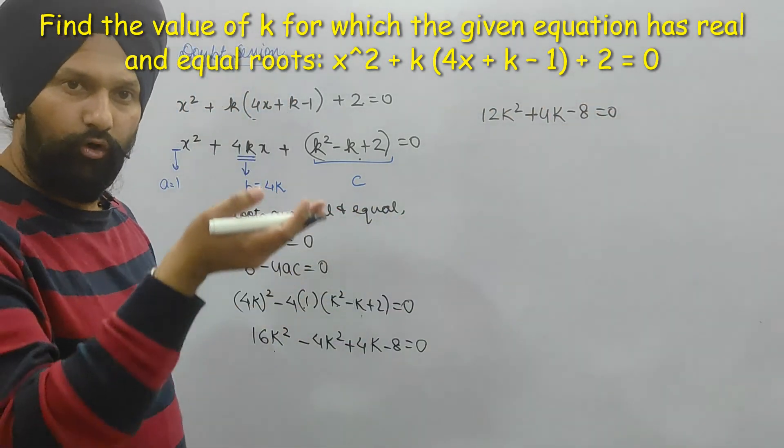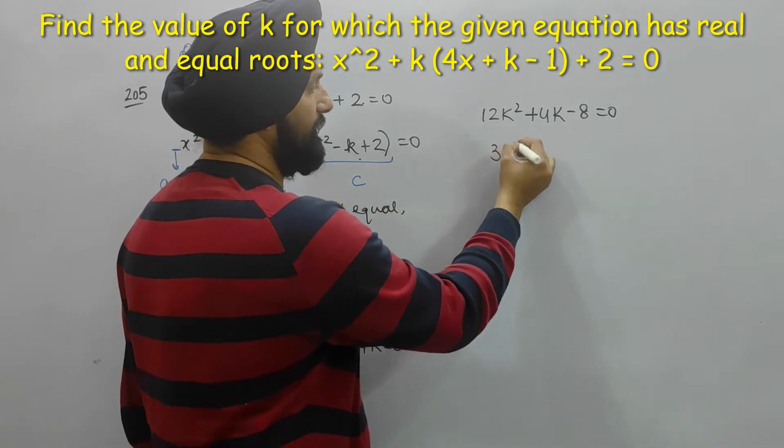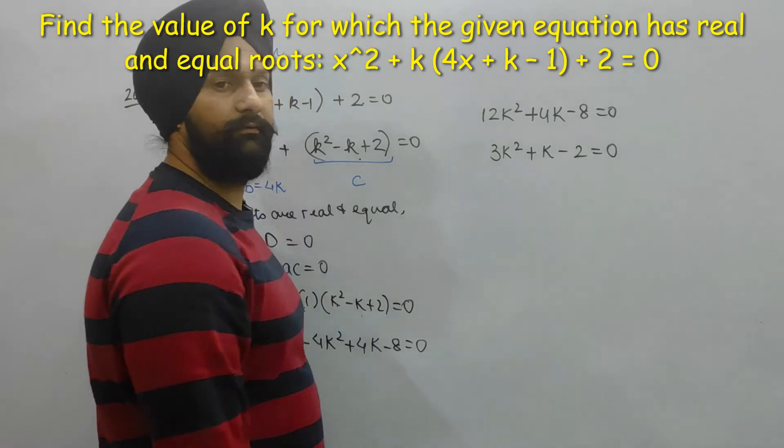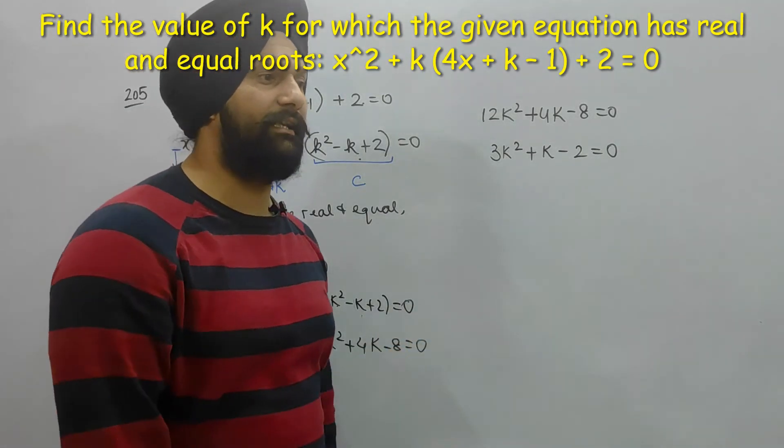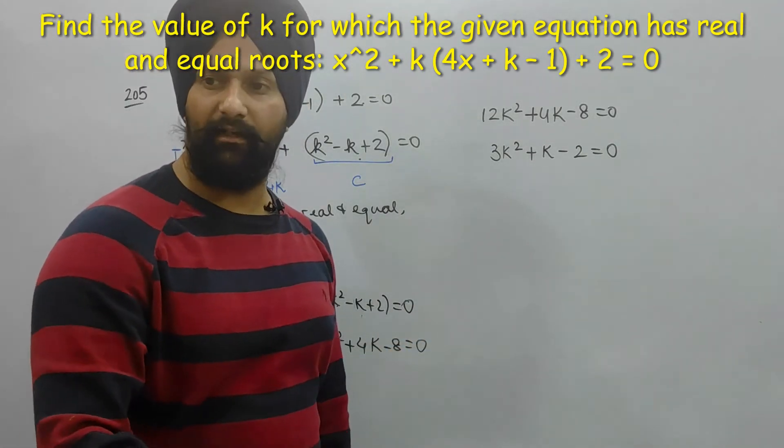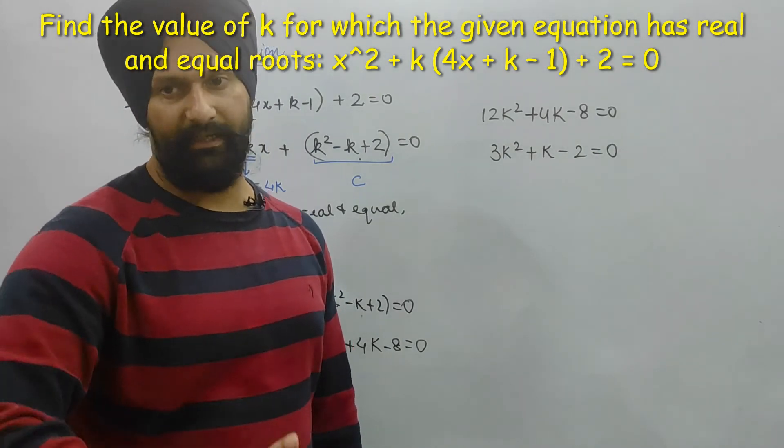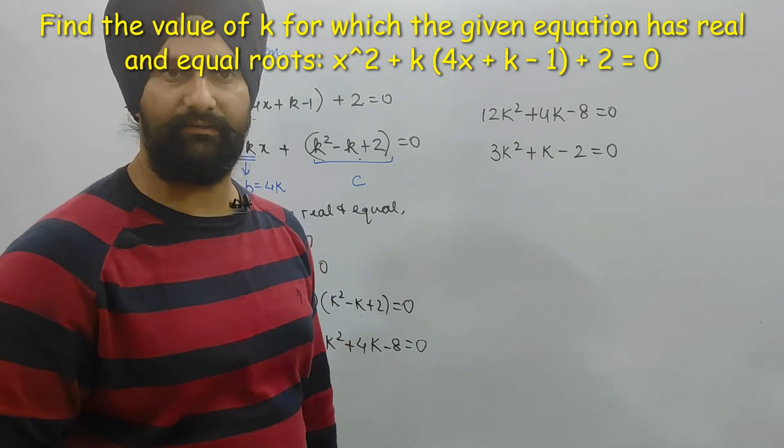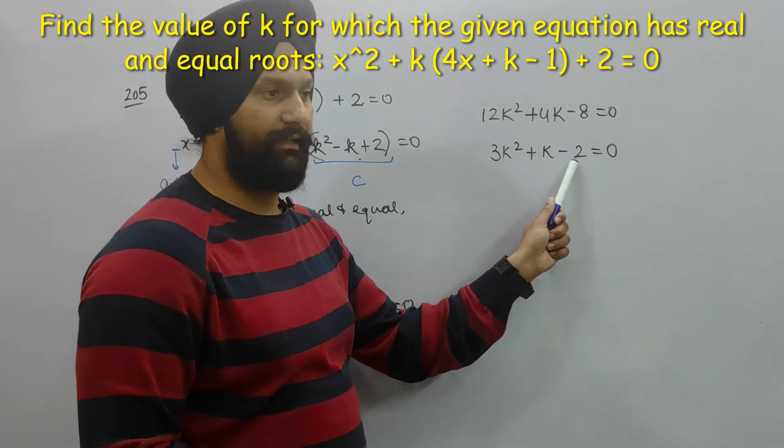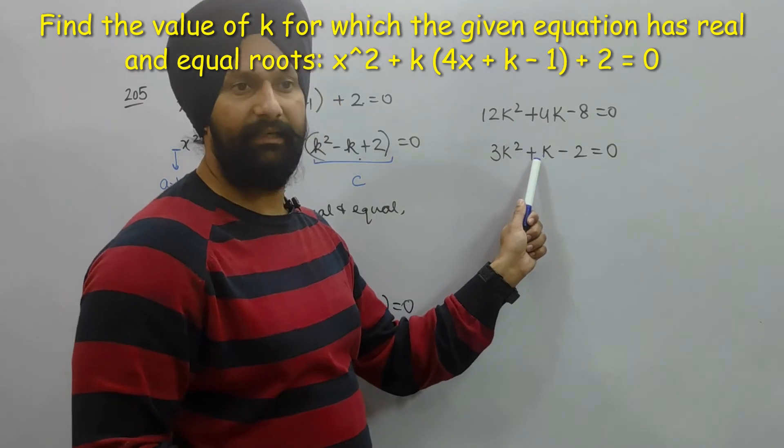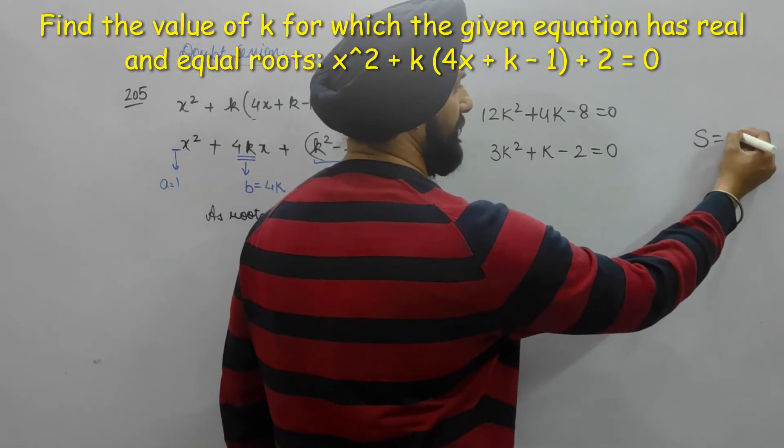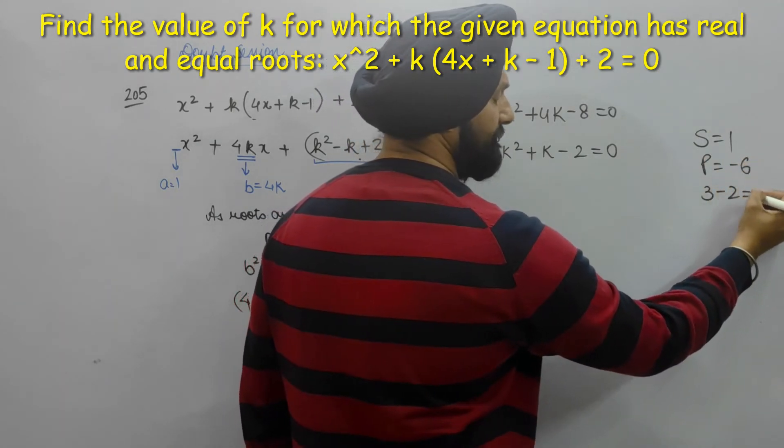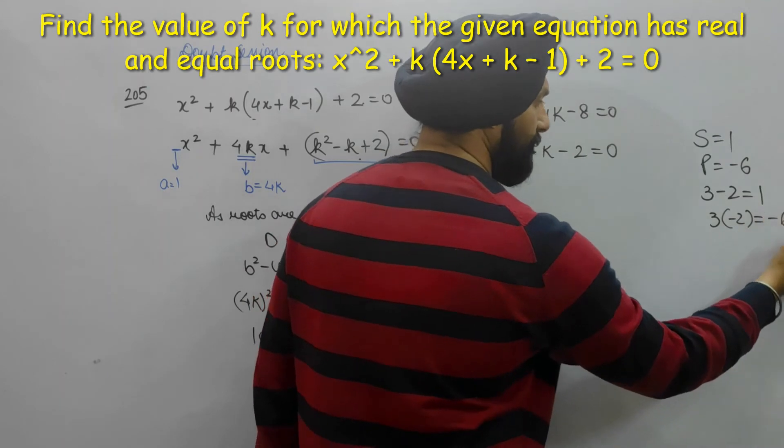So that is equal to 1. I am not going to discuss again and again that part. Product is -6, sum is 1. Sum has 1 and product has -6, so 3 minus 2 is 1 and 3 into minus 2 is minus 6.